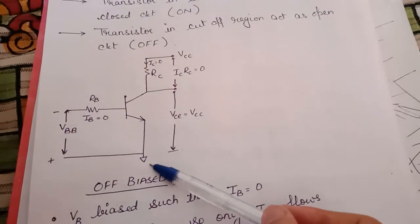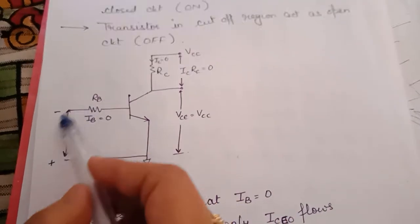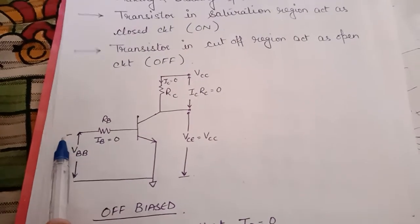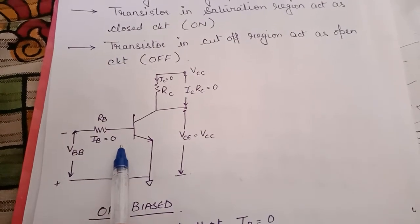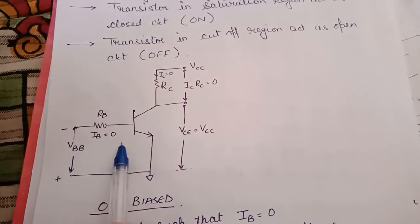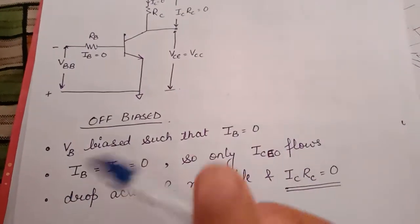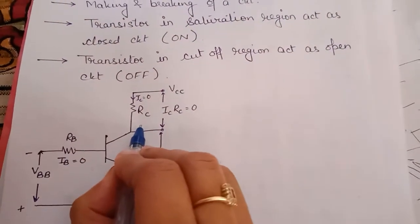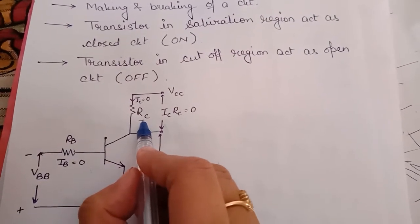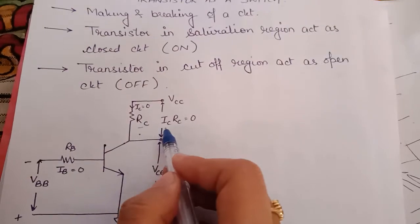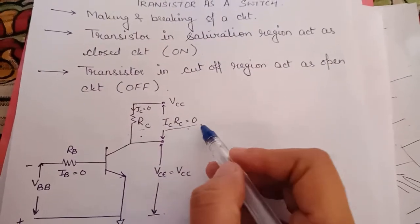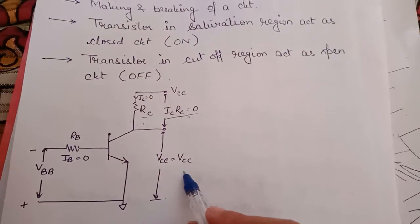For making the transistor work in the cutoff region, we reverse bias the input — that is, we reverse bias the base terminal. So this terminal is negative and this is positive. When the input of the transistor is reverse biased, current flow will be zero: input current IB is approximately zero, and when IB is zero, correspondingly IC will also be zero. Only leakage current will flow through RC, and leakage current is approximately zero. When leakage current is zero, the voltage drop across RC will be zero, so VCE will be equal to VC.